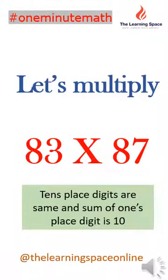Let's multiply 83 by 87. Here, the 10's place digits are the same, and the sum of the 1's place digits is 10.